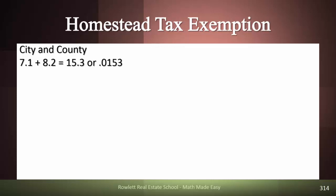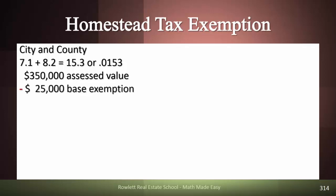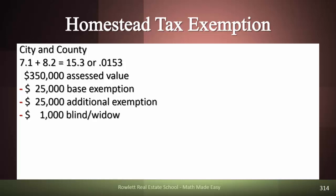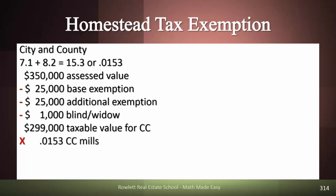On the city and county side, the millage rates are 7.1 and 8.2. Add those together and you get 15.3, or in decimal form: .0153 — don't forget to move the decimal three places. The assessed value is $350,000, which means we're greater than $75,000, so we get the base $25,000, the second $25,000, and since the owner is a blind widower we get another $1,000 off — so we subtract $51,000 from $350,000, leaving us with $299,000 as our taxable value.